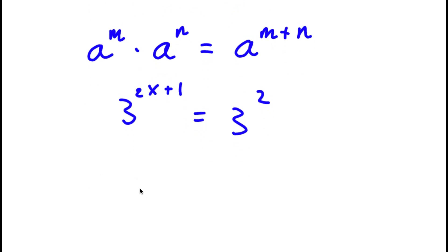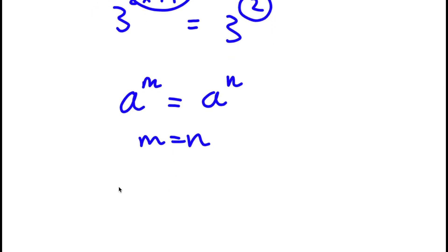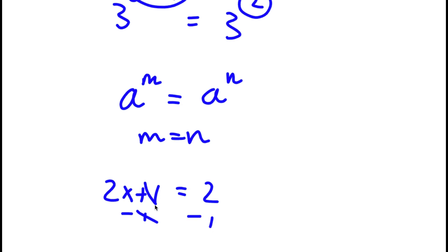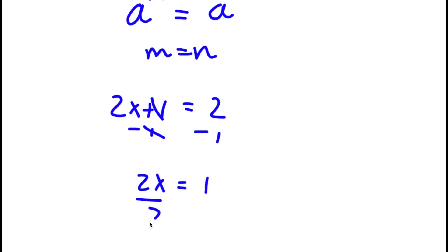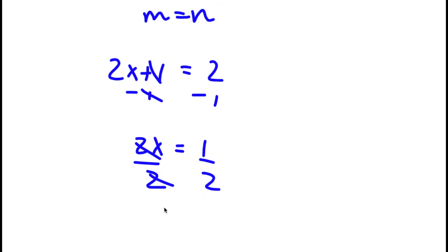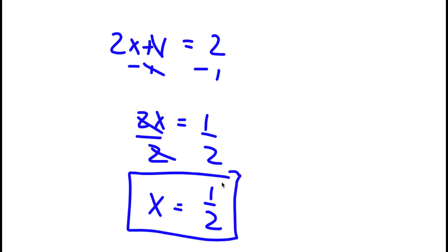If a to the power of m equals a to the power of n, then m equals n. So 2x plus 1 equals 2. Subtracting 1 from both sides gives 2x equals 1, and dividing both sides by 2 gives x equals one half. This is my answer.